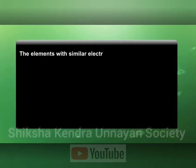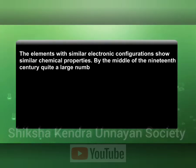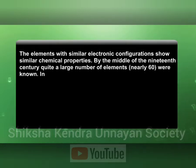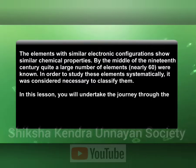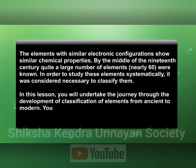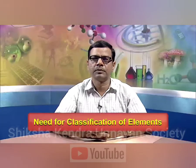The elements with similar electronic configuration show similar chemical properties. By the middle of the 19th century, quite a large number of elements — nearly 60 — were known. In order to study these elements systematically, it was considered necessary to classify them. In this lesson you will undertake the journey through the development of classification of elements from ancient to modern.